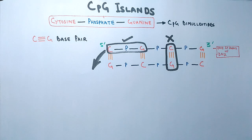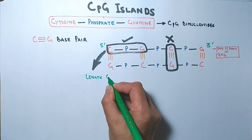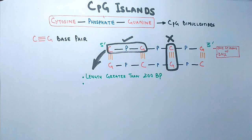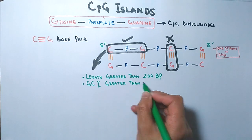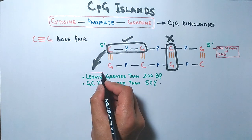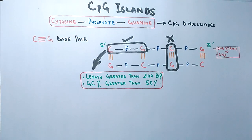In the genome, CpG dinucleotides occur many times, but not all can be called CpG islands. What makes a CpG island? It's when there is a length greater than 200 base pairs and a GC percentage greater than 50%. When these conditions are met anywhere in the genome, we call them CpG islands.